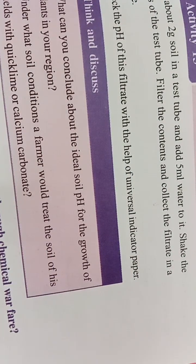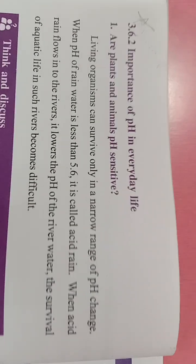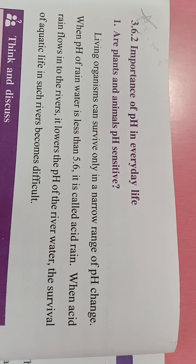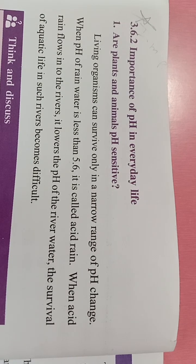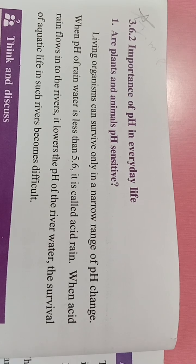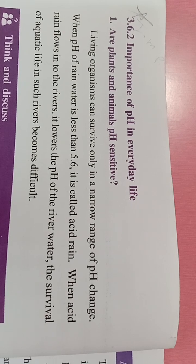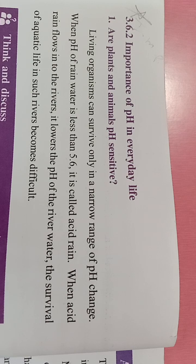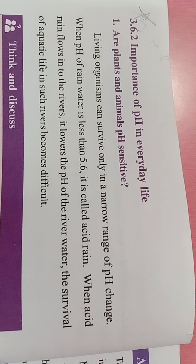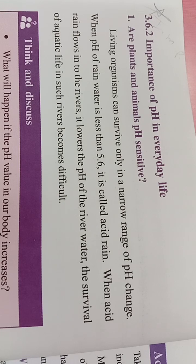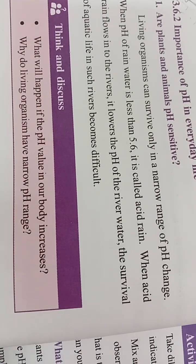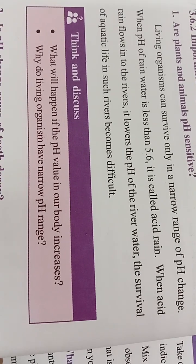Next: importance of pH in everyday life. Plants and animals are pH sensitive. Living organisms can survive only within a narrow range of pH. When the pH of rain is less than 5.6, it is called acid rain. If this water mixes with a lake or pond, the acidity of the water changes and it affects aquatic life - fish and other creatures may not survive in that pH range. When acid rain flows into rivers, it lowers the pH of the river water and survival of aquatic life becomes difficult.